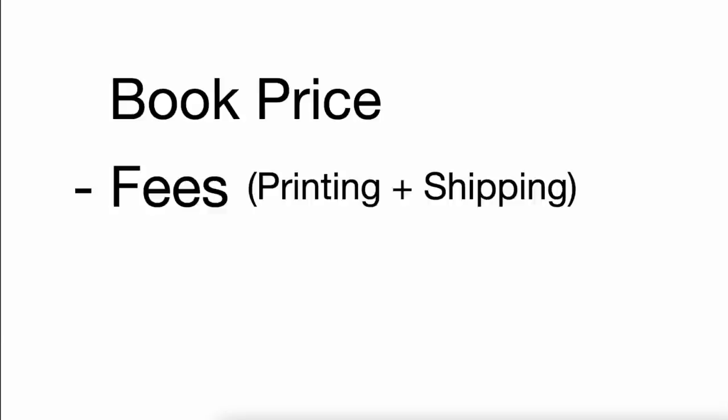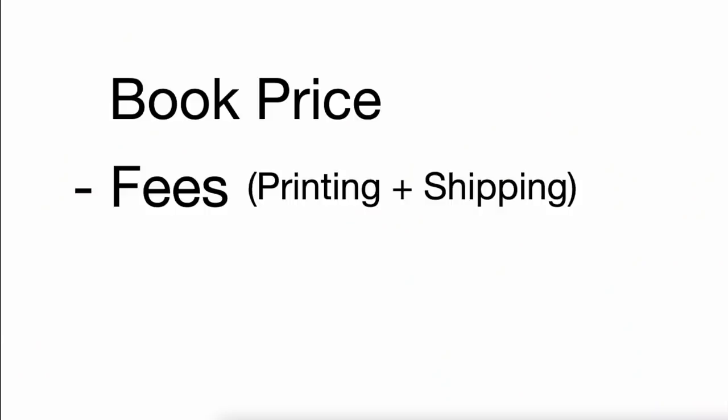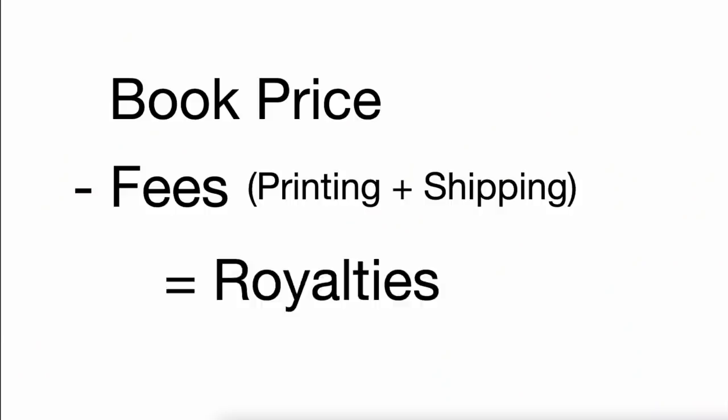For those of you new to self-publishing on Amazon, when you sell a book for say $6.99, which is a common price point for most low content books, Amazon takes its fees off that amount. These fees include the cost of printing and putting the book together, along with the cost of shipping it to the customer. What's left is your royalties, which Amazon pays directly into your bank account once a month.